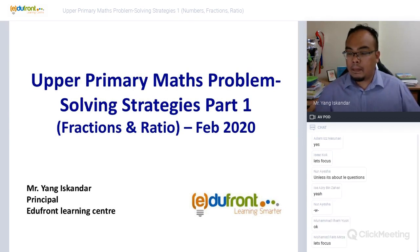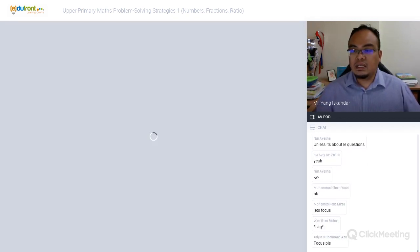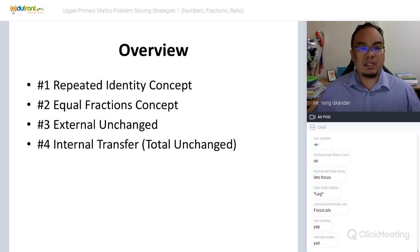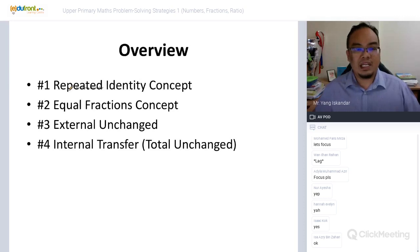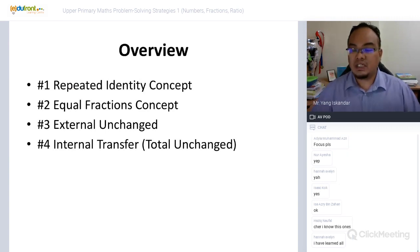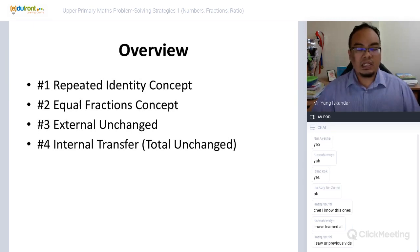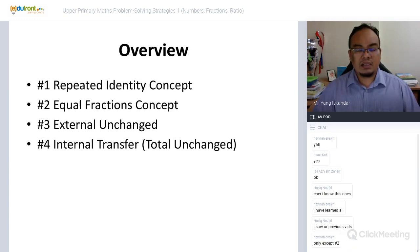Alright, let's start. Today we have about 40 to 45 minutes, and I'm going to share with you these four strategies: number one, Repeated Identity; number two, Equal Fraction Concept; number three, External Unchanged; and number four, Internal Transfer Total Unchanged.